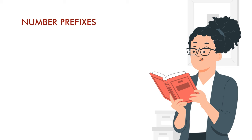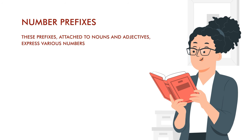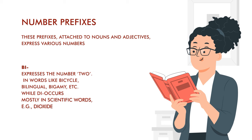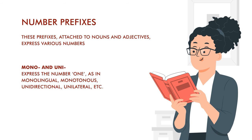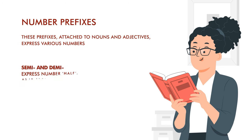Then you have number prefixes, again attached to nouns and adjectives. 'Bi-' as in two: 'bigamy,' 'bilingual.' 'Di-' occurs with scientific words: 'dioxide.' 'Tri-' as in 'tripod,' 'tricycle.' 'Mono-' as in one: 'monolingual,' 'monotonous.' 'Uni-': 'unidirectional,' 'unilateral.' 'Semi-': 'semicircle.'